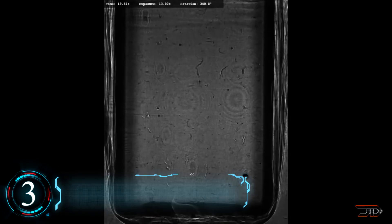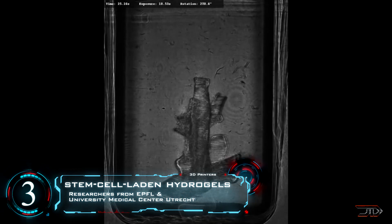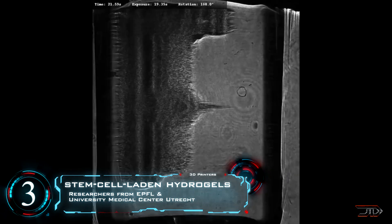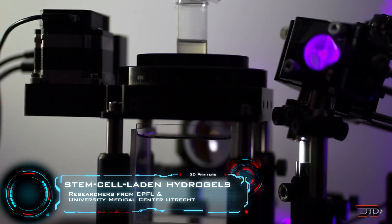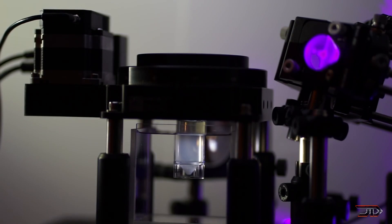At number 3, and yes, we have another bioprinter, which is from EPFL. Researchers have developed an extremely fast optical method, which takes less than 30 seconds from start to finish to print an object. It has a precision of around 80 micrometers and it can also work with soft materials such as hydrogels.